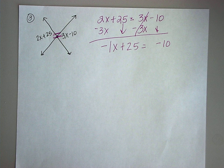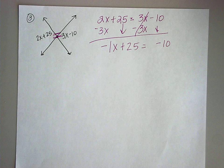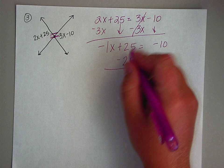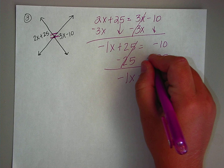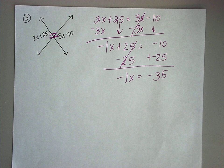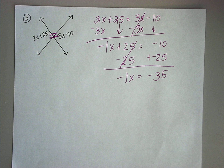Now move numbers to the right-hand side by subtracting 25 from both sides. That cancels, leaving negative 1x equals negative 35. Since we can't have a negative 1x, we divide by negative 1 on both sides, so x equals 35. We're going to continue working more equations with angle relationships.